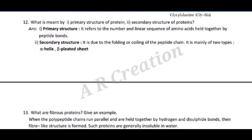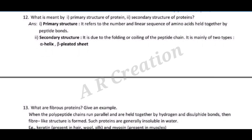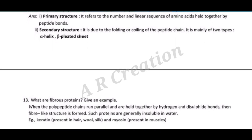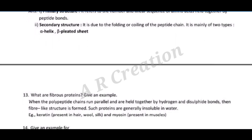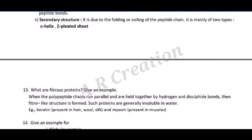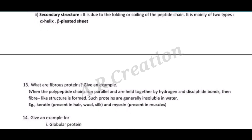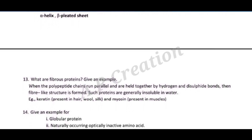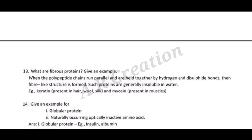The secondary structure is mainly of two types: (a) alpha-helix and (b) beta-pleated sheet. Question thirteen: what are fibrous proteins? Give an example. Answer: when polypeptide chains run parallel and are held together by hydrogen and disulfide bonds, a fiber-like structure is formed. Such proteins are generally insoluble in water.